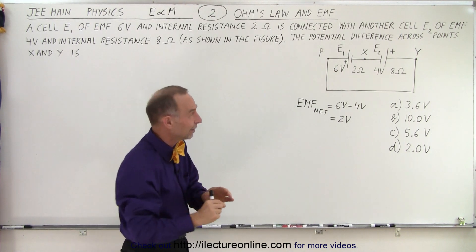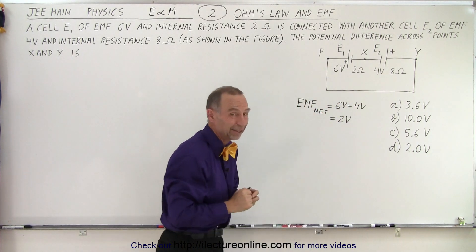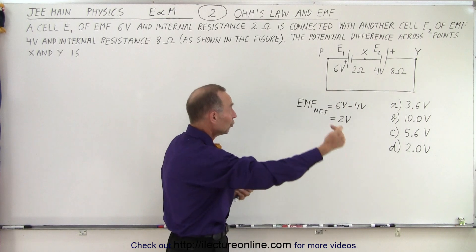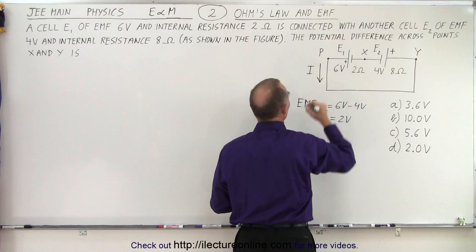So essentially we could remove those two and replace by a single EMF of 2 volts. Now of course that's not entirely true because they also have internal resistance we have to deal with, but from an EMF perspective the net EMF is simply 2 volts directed in this way, so that means that the current will flow in this direction.